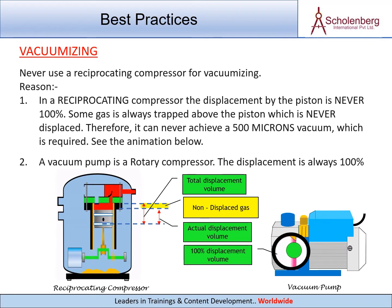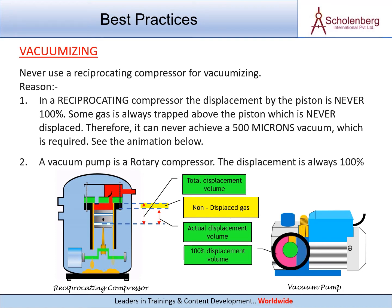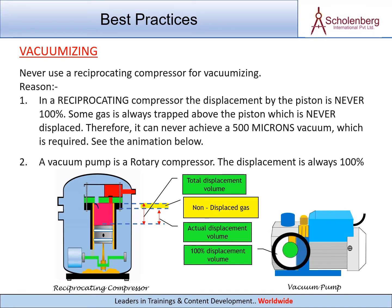Never use a reciprocating compressor for vacuumizing. Reason: in a reciprocating compressor, the displacement by the piston is never 100%. Some gas is always trapped above the piston which is never displaced. Therefore, it can never achieve a 500 microns vacuum, which is required.